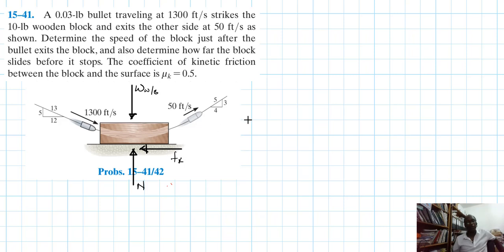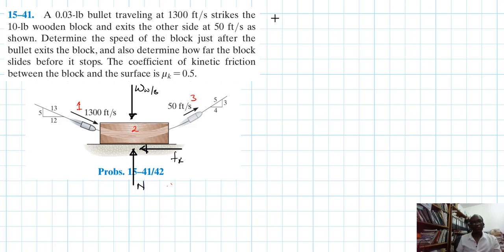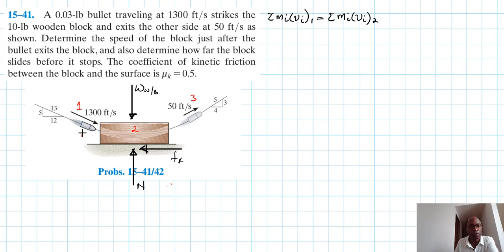We have the bullet there. Considering the impact period, which is very short, the bullet goes through the wooden block and then comes out. In finding the velocity of the block, we define three states: state one, state two, and state three. We label the bullet as B and the wooden block as WB.